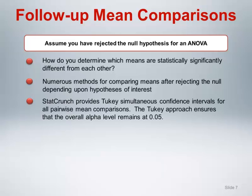StatCrunch has taken the approach of providing a single method called the Tukey approach that ensures the overall alpha error remains at 0.05 across all pairwise comparisons in the study. When performing analysis of variance, StatCrunch provides a checkbox that automatically generates Tukey simultaneous 95% confidence intervals for all pairwise mean comparisons. From the 95% confidence interval, we can conclude whether or not the corresponding hypothesis test at 0.05 is statistically significant.